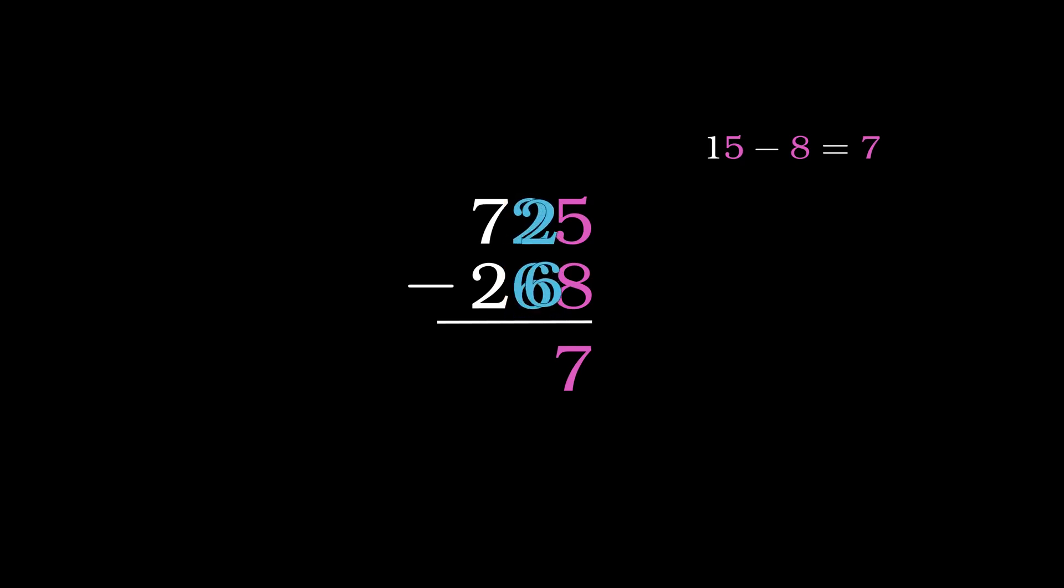The middle number column gives 2 minus 6, so we need to borrow again, but this time from the left number column, we have 12 minus 6 instead. Remember, we need to return the one we borrowed, hence 6 will become 7, so we have 12 minus 7, which equals 5.